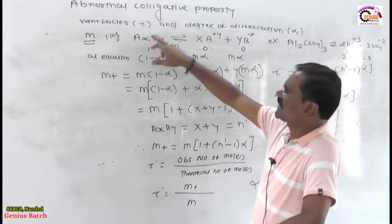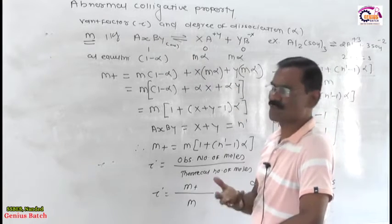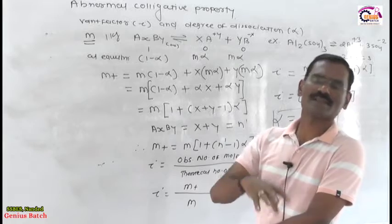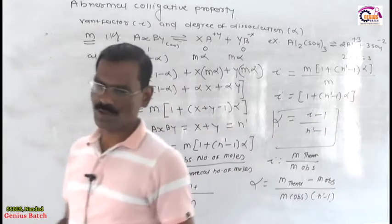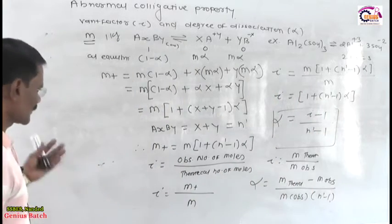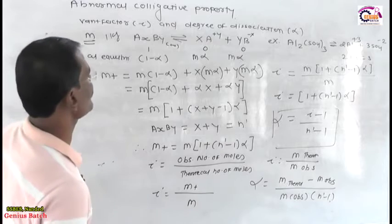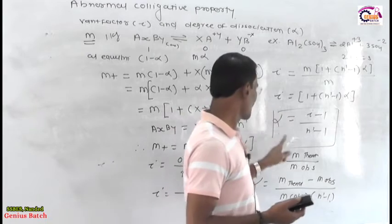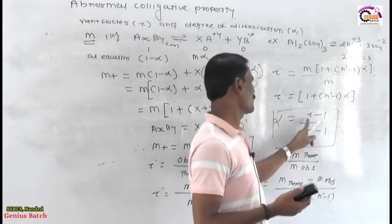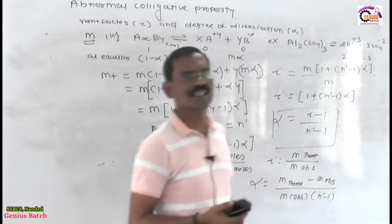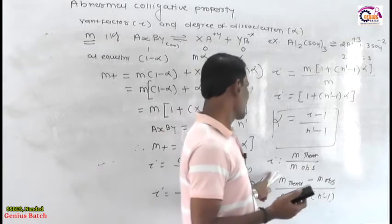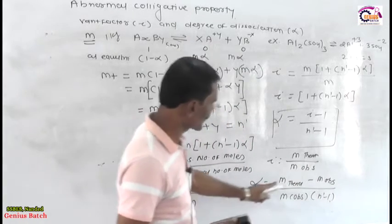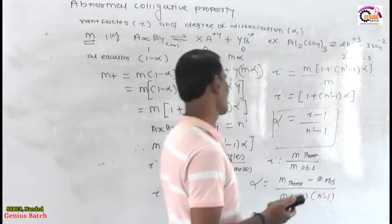As you know, what is the relation between van't Hoff factor and degree of dissociation — this concept we also discussed in previous videos. Today I am going to discuss some problems related with this van't Hoff factor. Keep in mind this formula: alpha, the degree of dissociation, is equal to (i minus 1) divided by (n' minus 1), or i equals m_theoretical divided by m_observed, or (m_theoretical minus m_observed) divided by (m_observed × (n' minus 1)).